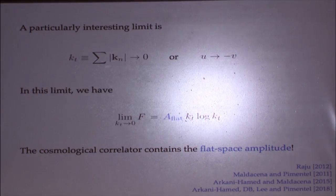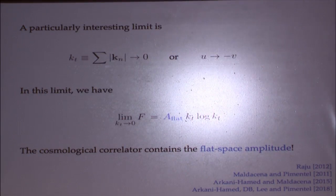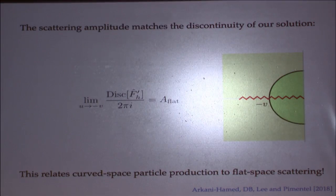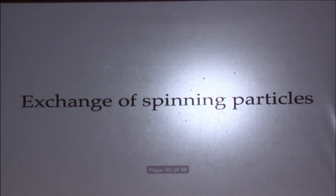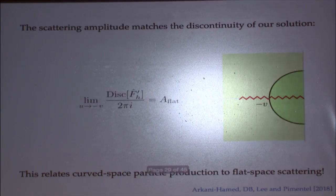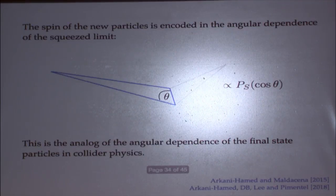You actually reproduce the flat space scattering amplitude, and you can then relate that flat space scattering amplitude to the discontinuity of our solution. This provides a link between curved space particle production and flat space scattering that will be interesting to discuss, but there's no time. We can also write higher spin exchange solutions purely in terms of a scalar exchange with some differential operation acting on it.